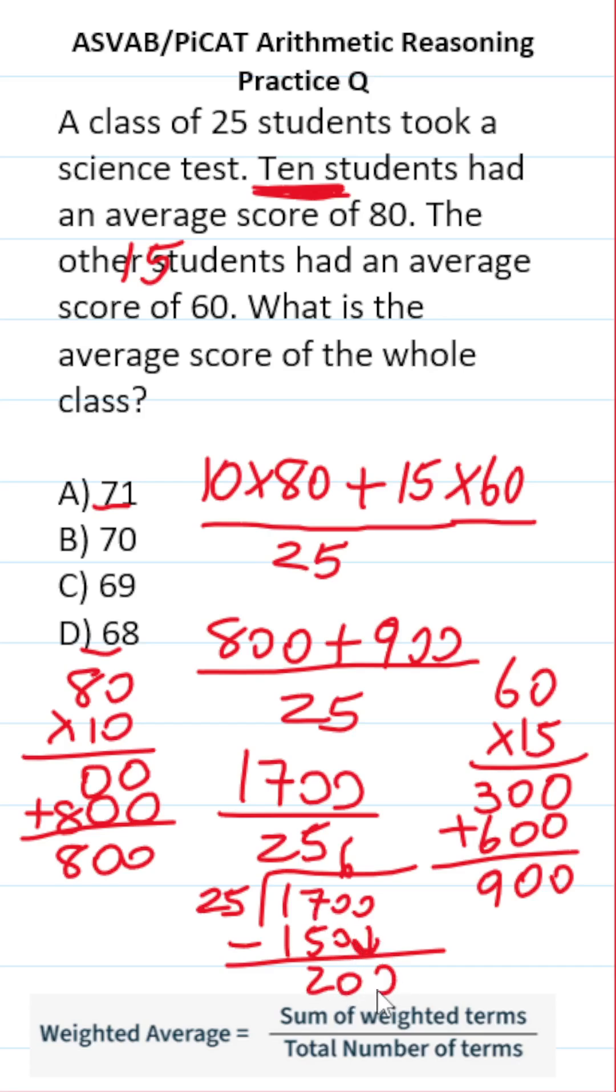And then we drop down this 0. How many times does 25 go into 200 without going over? It's going to be 8 times. 25 times 8 is exactly 200, so we have no remainder. So the correct answer to this one is the average score of the whole class is D68.